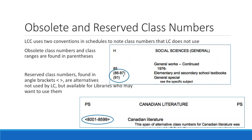Numbers in angle brackets — for example the range PS 8001 through 8599 for Canadian literature — are not used by the Library of Congress. They have been reserved for use by other communities that make use of LCC. I've seen these most often in the PS schedule and in the K schedule for law.